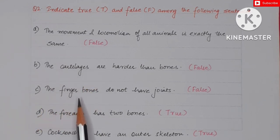Then next statement is: the finger bones do not have joints. The bones in our fingers, which we call phalanges, do they have joints between them? This is false statement. There are joints between them, and those joints are called hinge joints. And because of the presence of hinge joint we are able to bend our fingers only in the forward direction. Now the next statement is: the forearm has two bones. Does the forearm or lower arm have two bones present? Yes, this statement is true, and those two bones are called radius and ulna. Then next statement is: cockroaches have an outer skeleton. Does the cockroach body have an outer skeleton present? Yes, we call it exoskeleton, so this statement is also true.